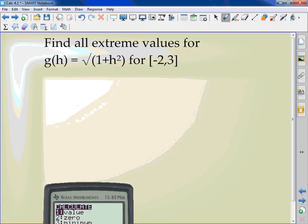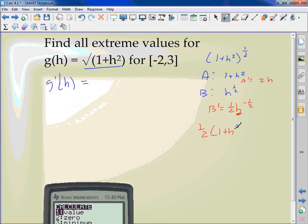Try this one. I have got to find the extreme values for g of h equals the square root of 1 plus h squared, and I'm looking on the interval of negative 2 to 3. First thing I need to do take the derivative, so g prime of h. This right here really means 1 plus h squared to the 1 half. So I have a chain rule. A is going to be 1 plus h squared, B is going to be h to the 1 half. The derivative here is just 2h. The derivative here is 1 half h to the negative 1 half. I replace my h with 1 plus h squared to the negative 1 half.